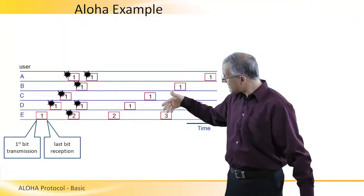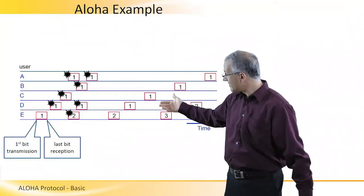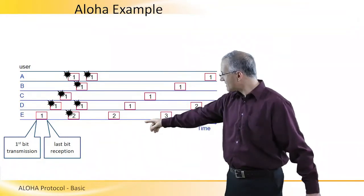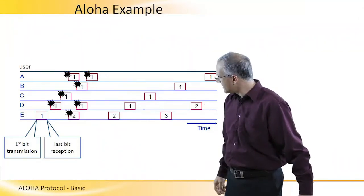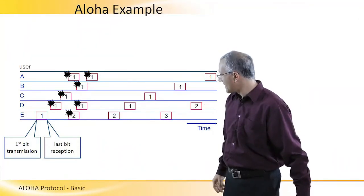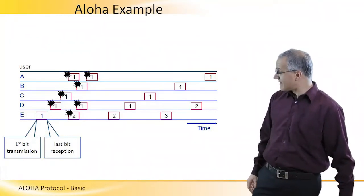And while A and B are still trying to transmit their own colliding frames, user E managed to transmit a third frame in between other user frames. So what you can see here is that these things can work.